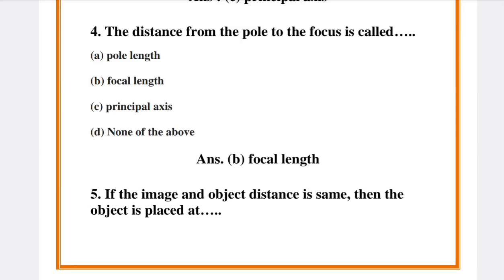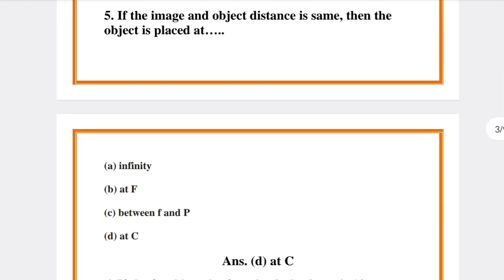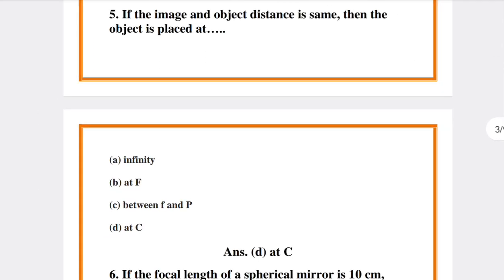Focal Length Question 5. If the Image and Object Distance is Same, then the Object is Placed at Answer D at C.